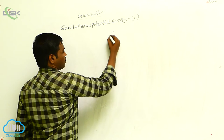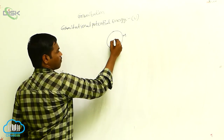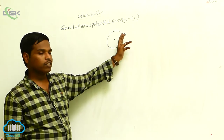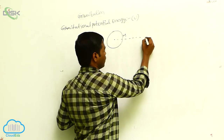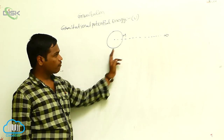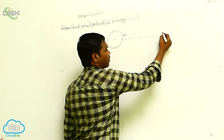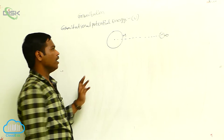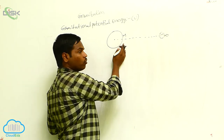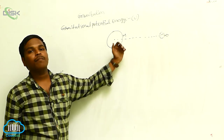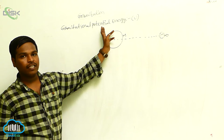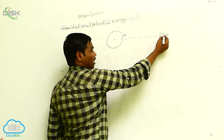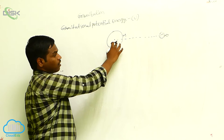To calculate this, I am considering capital M as the mass of an object, around which the gravitational force is acting. From an infinite distance, I am bringing a small m mass of an object into this gravitational field. To bring this m mass into the gravitational field, we require some energy, which is called gravitational potential energy.